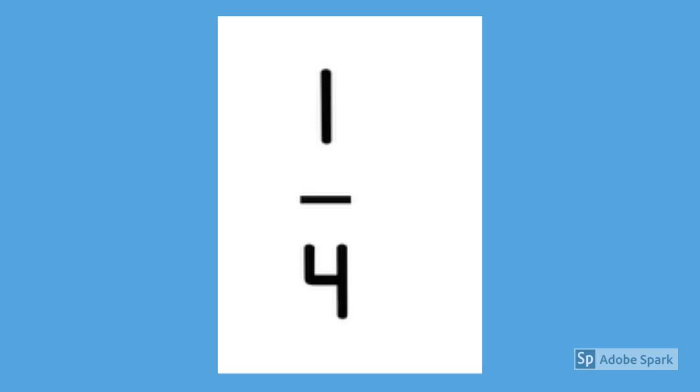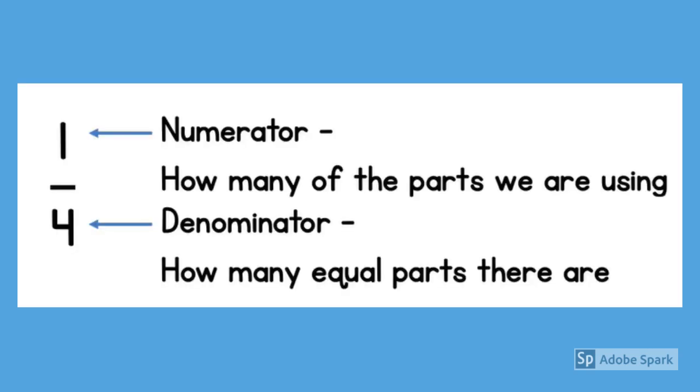But can you tell me something about this fraction? What does the 4 mean and what does the 1 mean? So are you correct? Yes, the 4 is known as the denominator. This is how many equal parts there are. The 1 is the numerator and this is how many parts we are using. On a bar model we often shade in the number of parts, the numerator.